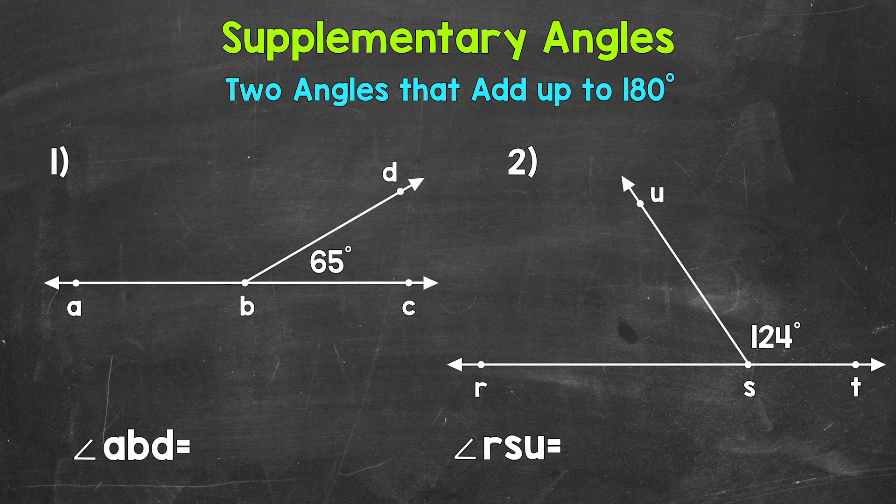Now, supplementary angles are two angles that add up to 180 degrees. And a 180 degree angle is going to make a straight line. So if the sum of two angles is 180 degrees, they are supplementary. Let's jump into our examples where we have supplementary angles, but one of the angles will be unknown or missing, and we need to find that missing angle measure.